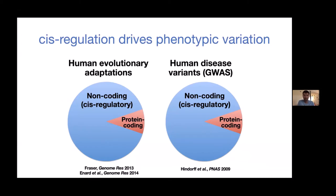Work from my lab as well as many other labs shows that cis regulation seems to be the major driver of phenotypic variation. The best data comes from humans — both human evolutionary adaptations and disease variants mapped from GWAS show that the vast majority of signal comes from non-coding or cis-regulatory regions. Only about 10% comes from protein-coding regions in both cases, suggesting that cis-regulation is really the key to understanding the evolution of these complex traits.